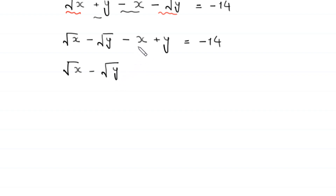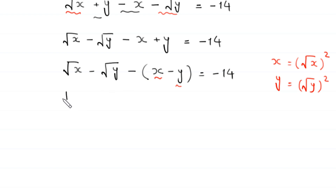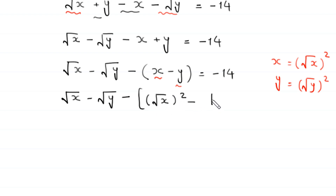Now, x can be written as root x squared, and y can be written as root y squared. So this equation becomes root x minus root y minus root x squared minus root y squared, which equals negative 14.